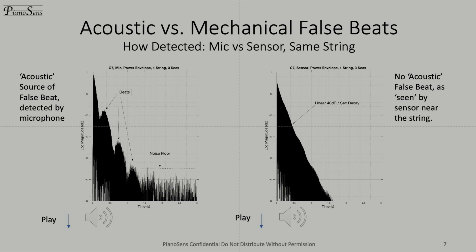The graph on the left is an acoustic false beat being picked up, perhaps by a resonance in the piano. It could be a rear duplex, an undamped string somewhere, or a reflection happening within the piano itself. You can see that there is a beat pattern going on — roughly three beats per second, so that would be a three hertz false beat.